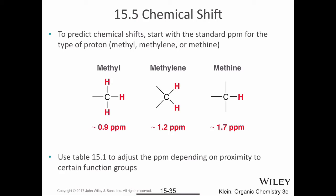In order to predict the chemical shifts in a wide variety of organic compounds, we start with some benchmark values. If we have a methyl, a methylene, or a methine, we have these three chemical shifts as our benchmark values. For a methyl, it's 0.9 parts per million. A methylene is a little bit more deshielded, at around 1.2 parts per million. And a methine proton will have a chemical shift of around 1.7 parts per million.